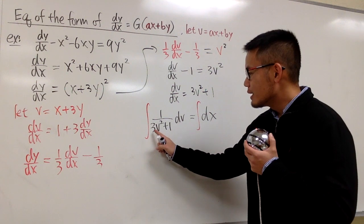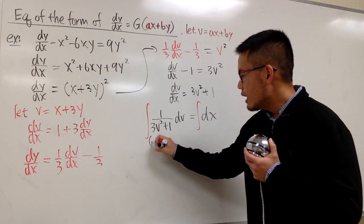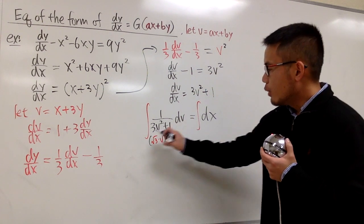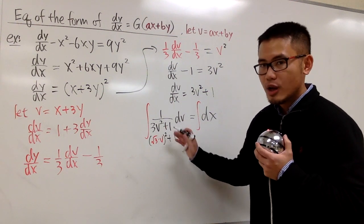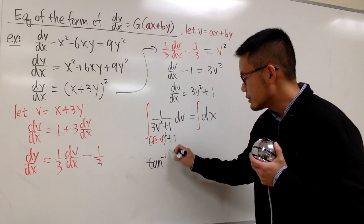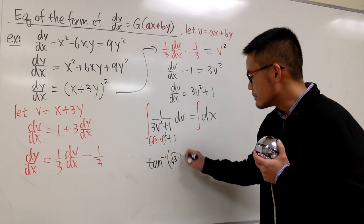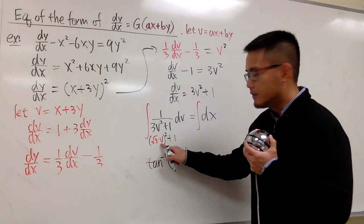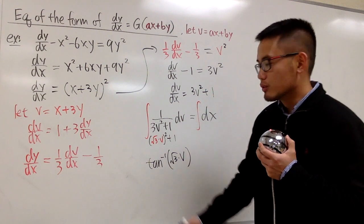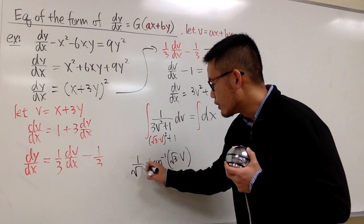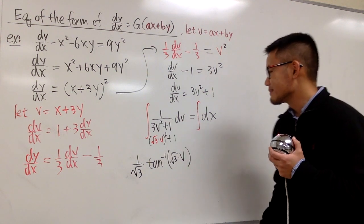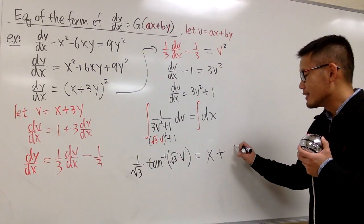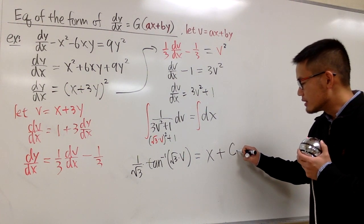We integrate both sides. For the left side, rewrite 3v² as (√3·v)², so we have 1/((√3·v)² + 1), which integrates to inverse tangent. The input is √3·v, and the derivative of √3·v is √3, so we divide by √3, giving (1/√3)·arctan(√3·v). This equals x + C₁.